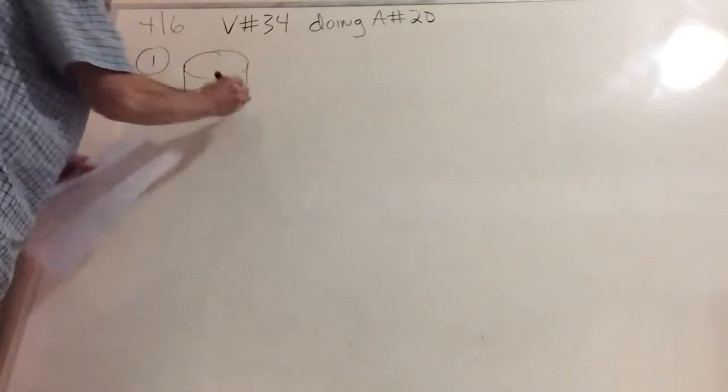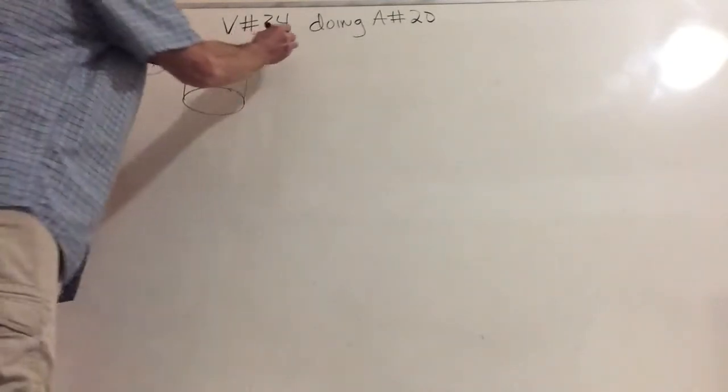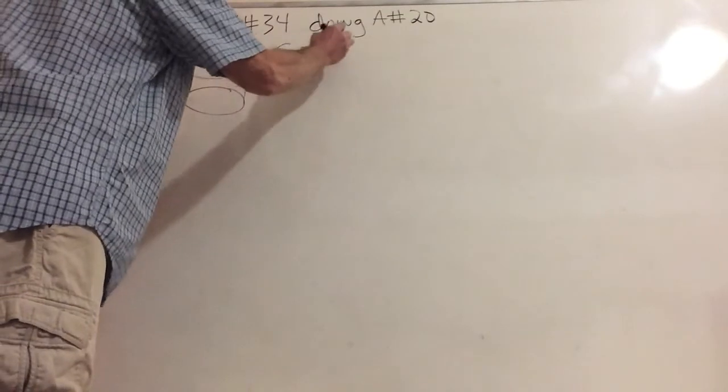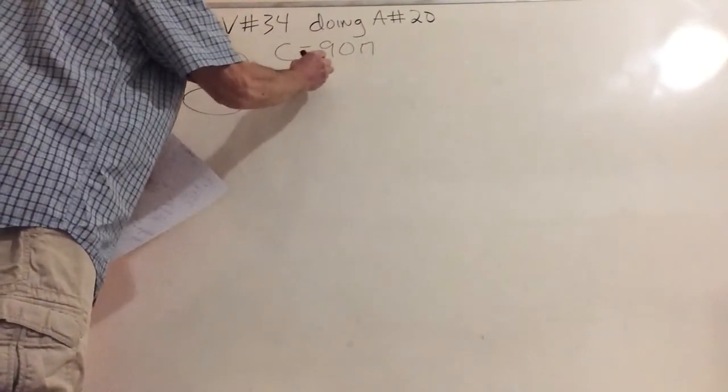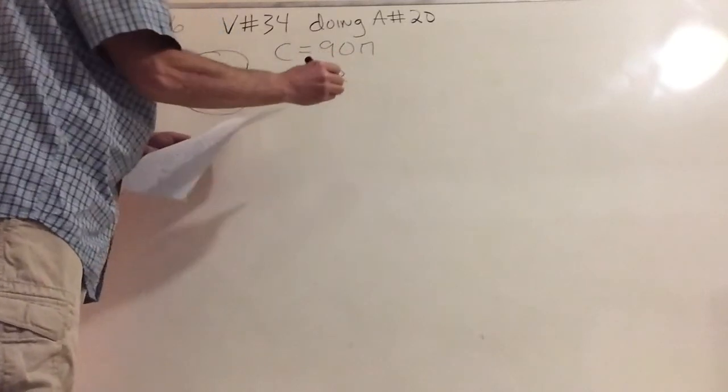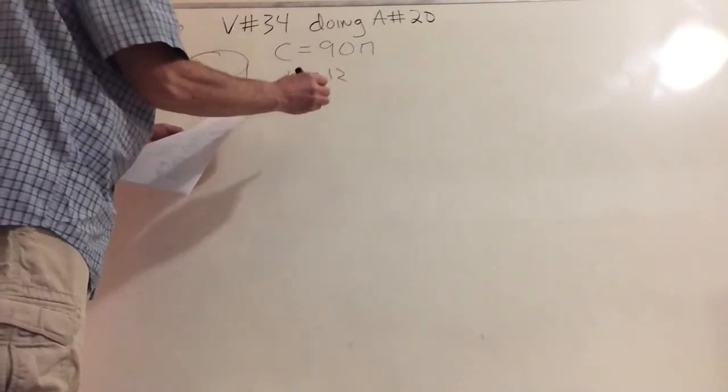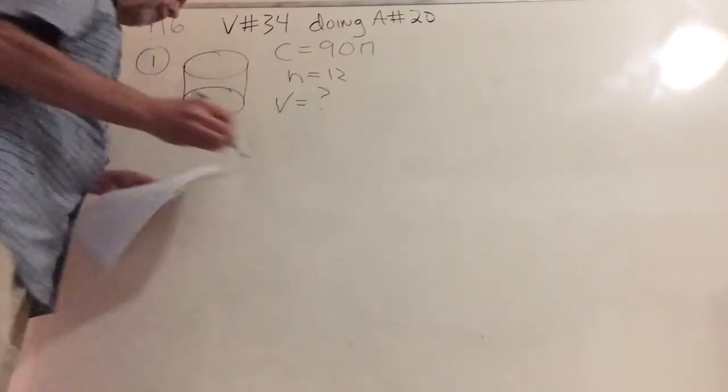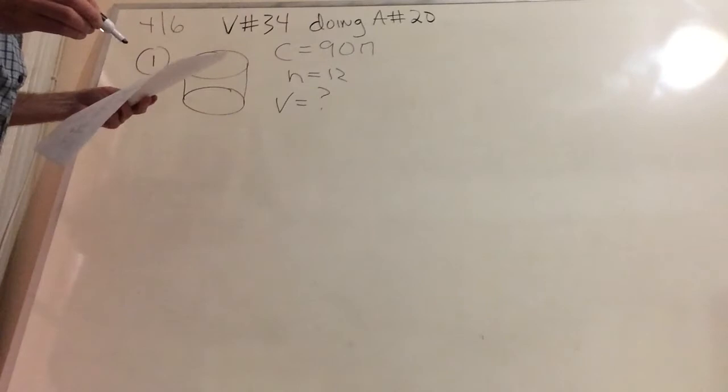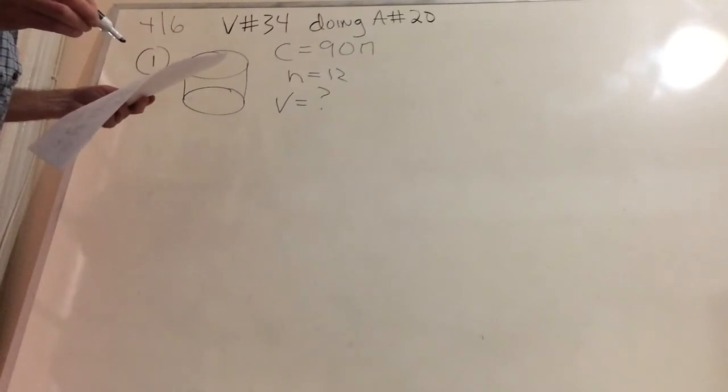Today is 4-6, and I'll dedicate this video to doing the assignments that I gave you on Thursday. We'll start with the first one here, and this is number one. Quickly make a cylinder, and the circumference is equals 90π, and the height equals 12, and you're required to find the volume.